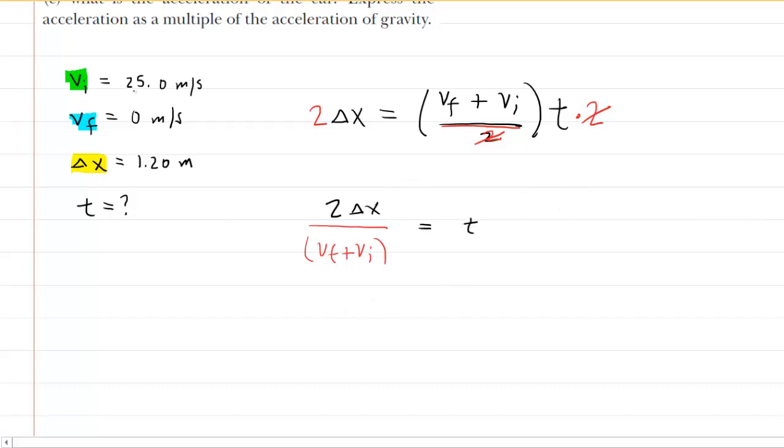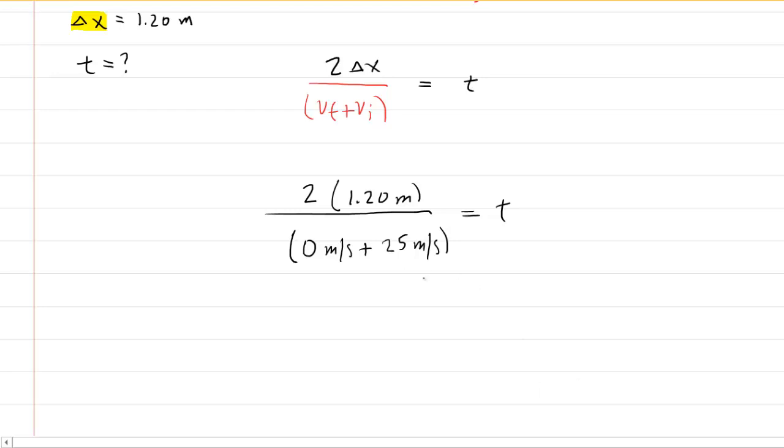We can just punch everything in that we have listed on the side. And so when you plug those values in and press the enter button on your calculator, you're going to get 0.096 seconds as the time interval.